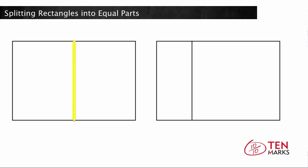This rectangle is split into two parts, but the parts are not equal. Notice how one of the parts takes up more than half of the rectangle and one part is smaller. Therefore, these are not halves. You can only talk about halves when the two parts are equal or the same size.